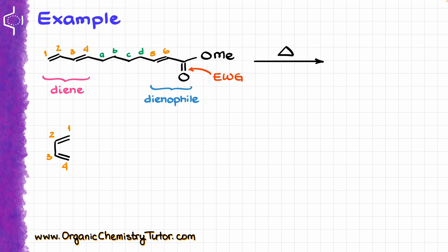The next thing I'm going to do is redraw my diene right away in the s-cis conformation, the way I need it for this reaction. I will also show my carbons 5 and 6 from my dienophile nearby, so it's easier to visualize how this reaction is going to occur. The reason I'm orienting my atoms like that is because I remember that atoms 4 and 5 are connected by the chain of atoms A, B, C, and D, so I'm going to have to have atom 4 and atom 5 on the same side of the molecule. With that in mind, I'm going to start dressing up my molecule with the substituents that I have sitting on it. On my atom number 6, I have my electron withdrawing group, so I'm going to show that.